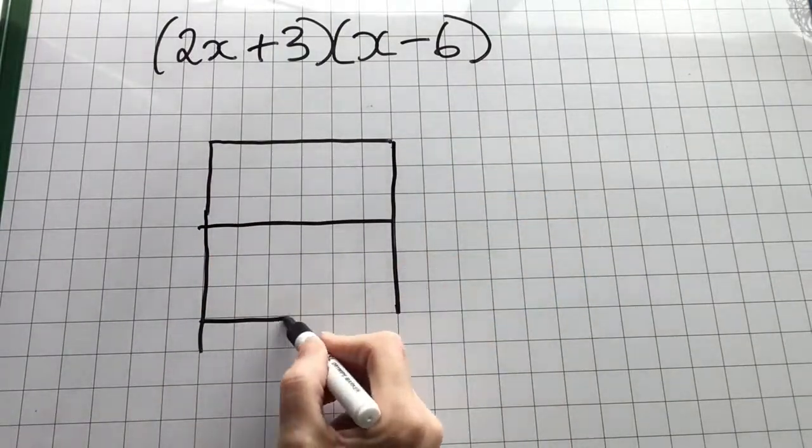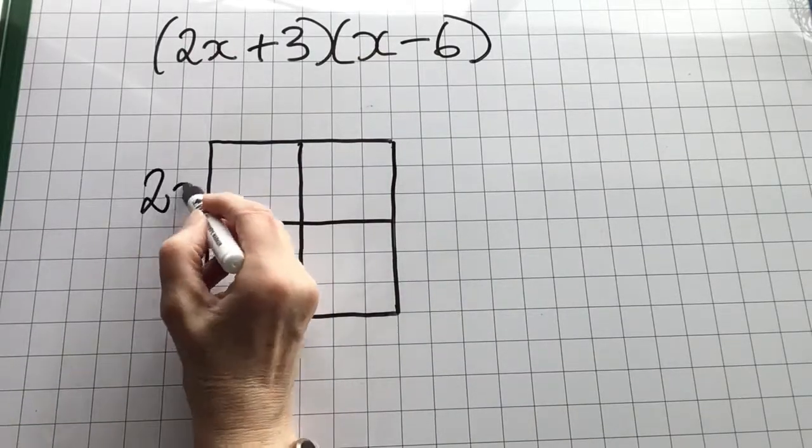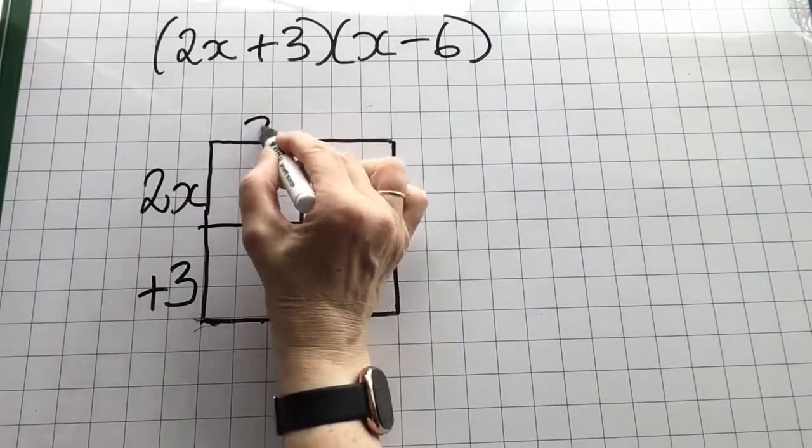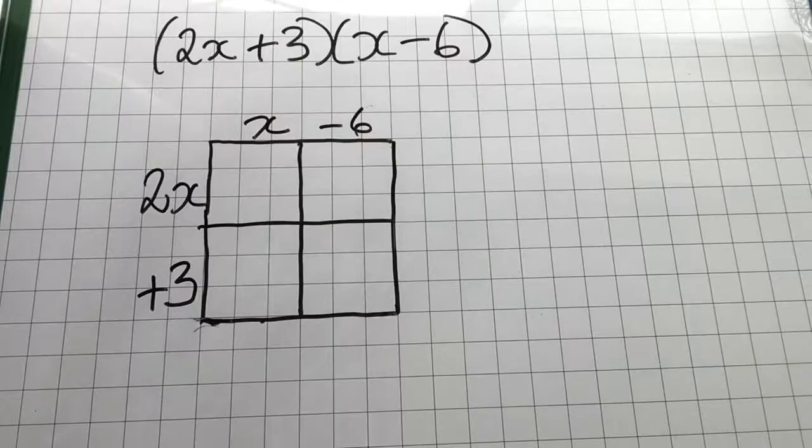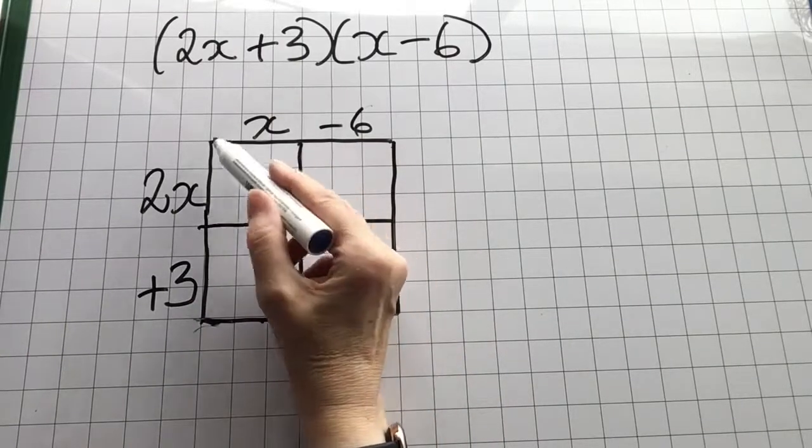Again I write one expression on one side of the grid, and the other on the other side, and find the areas.